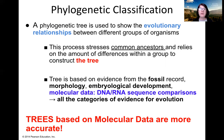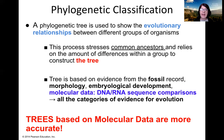You can construct a tree based on a few shared characteristics or based solely on molecular data. Scientists usually rely on multiple pieces of data, but you could construct a tree based on just morphology. It is important to understand that a tree based solely on morphology is less accurate than a tree based on molecular data. Trees based on molecular data tend to be more accurate in determining evolutionary relationships between organisms.